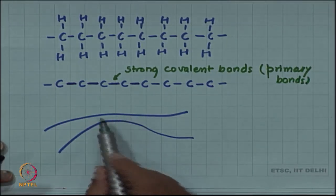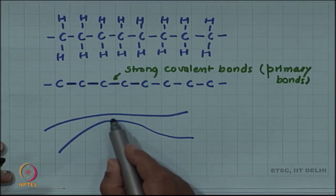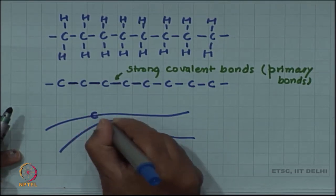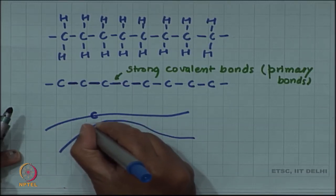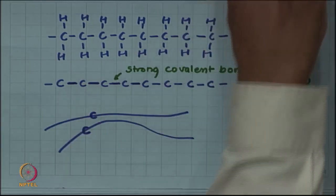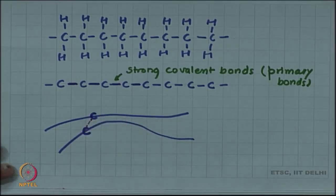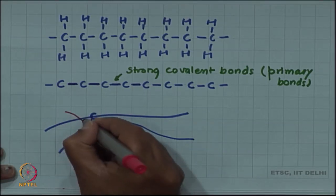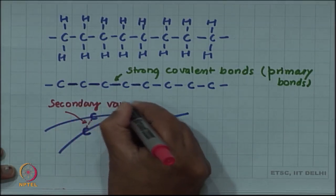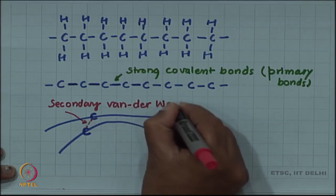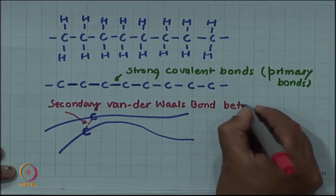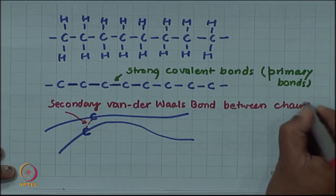These are called primary bonds. However, within a chain versus across the chain between one chain to another chain - suppose there is a carbon atom here, all its bond is satisfied and another carbon atom is here, all its bonds are also satisfied. So, there is no primary bonding between this carbon and this carbon. They attract each other only through a secondary bond called the van der Waals bond - secondary bond between chains.